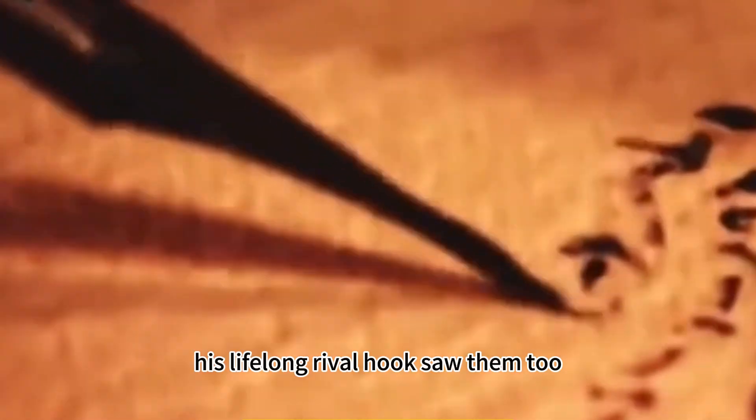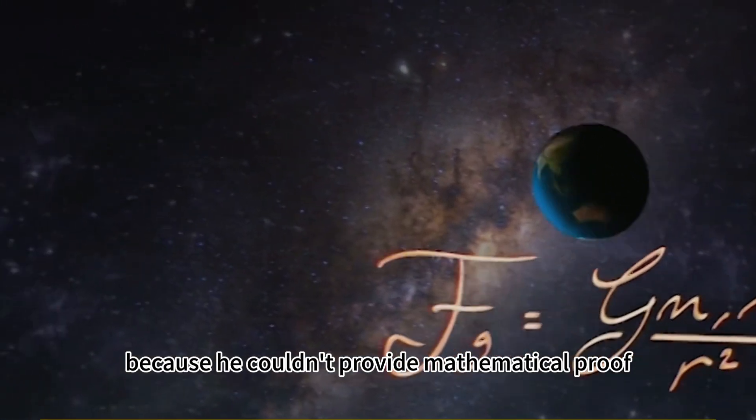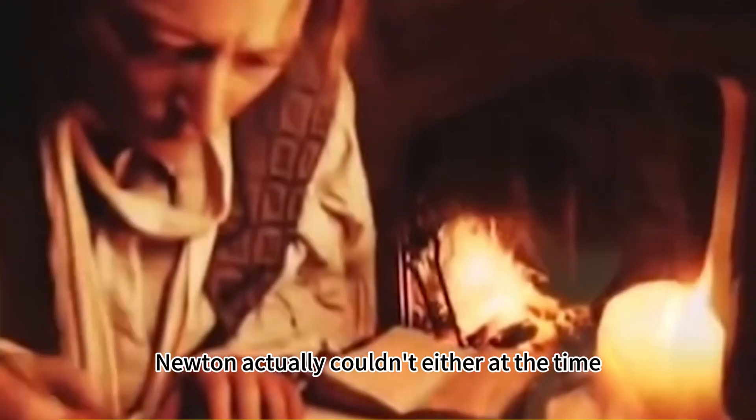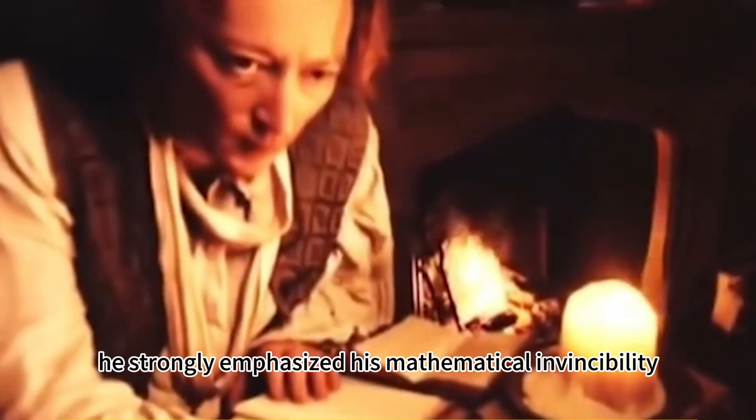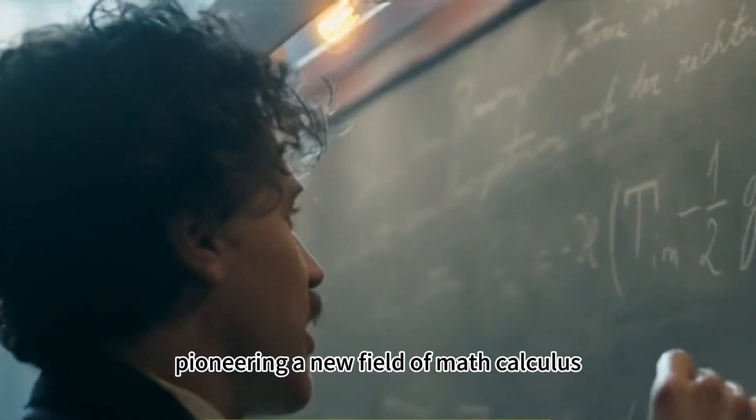His lifelong rival Hooke saw them too. But why didn't Hooke succeed? Because he couldn't provide mathematical proof. Newton actually couldn't either at the time, but he strongly emphasized his mathematical invincibility, pioneering a new field of math, calculus.